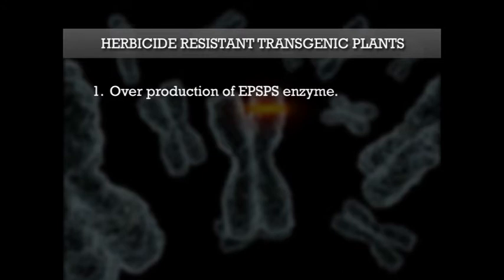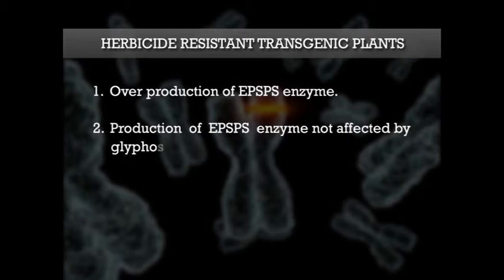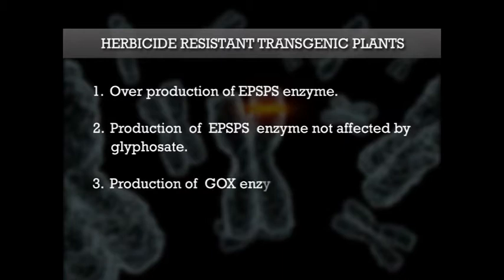The first strategy is overproduction of the EPSPS enzyme. Secondly, production of an EPSPS enzyme not affected by glyphosate. Third, production of a GOX enzyme which deactivates glyphosate. The mutant EPSPS gene and GOX have been used for the production of the Roundup Ready maize variety by Monsanto, USA.